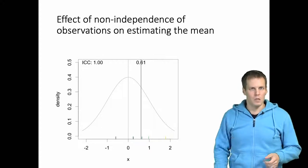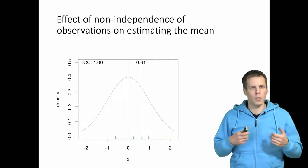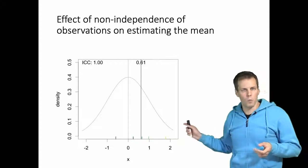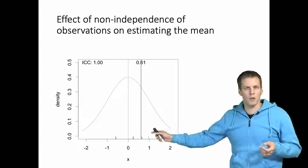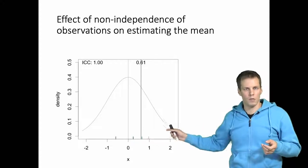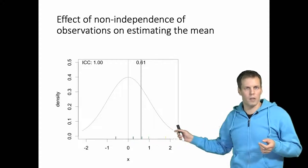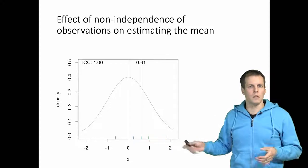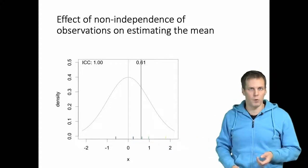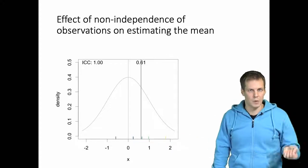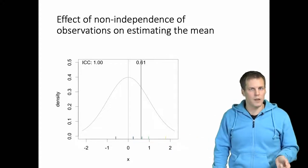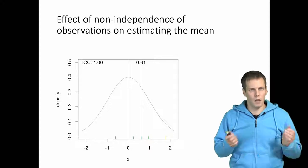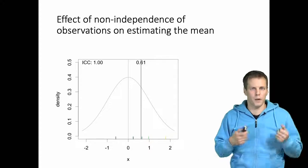The problem is that when intraclass correlation increases — when there is non-independence — our estimates will be less precise. They are still consistent and still unbiased, but they are less precise.